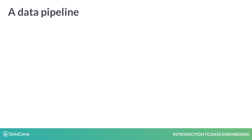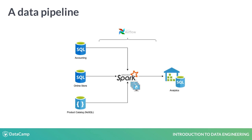To sum everything up, you can think of the data engineering pipeline through this diagram. It extracts all data through connections with several databases, transforms it using a cluster computing framework like Spark, and loads it into an analytical database. Also, everything is scheduled to run in a specific order through a scheduling framework like Airflow. A small side note here is that the sources can be external APIs or other file formats too. We'll see this in the exercises.